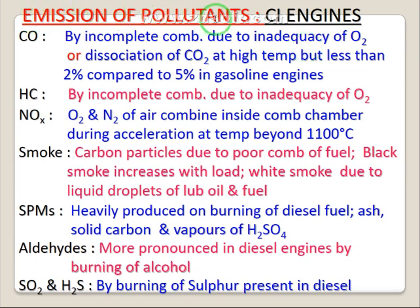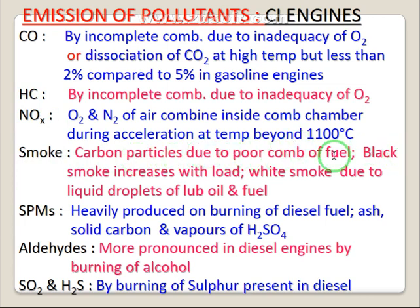Our next part is emissions of pollutants from CI engines. Most of the emission components of CI engines are also carbon monoxide, hydrocarbons, and NOx — so we will not discuss those again. The next distinct pollutant is smoke — carbon particles due to poor combustion of fuel. Black smoke increases with load, and there is also smoke due to liquid droplets of lubricating oil and fuel. The percentage of smoke from CI engines is more compared to SI engines; in SI engines the percentage of smoke is very negligible, so you cannot observe black smoke from the exhaust pipe of an SI engine.